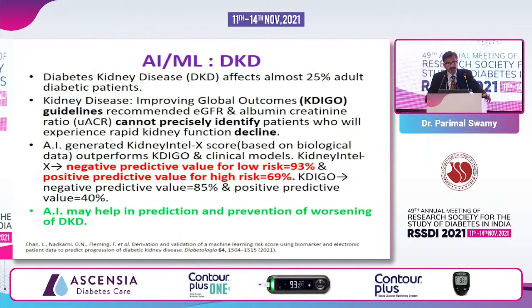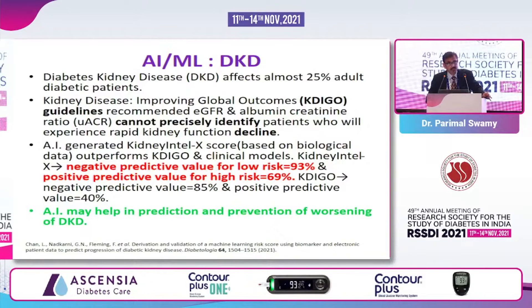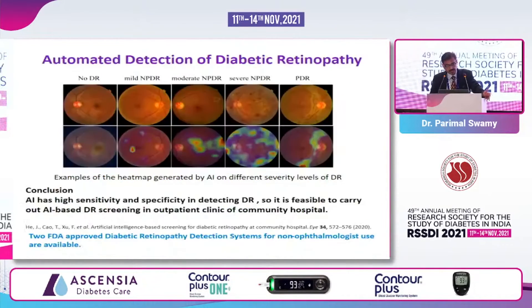Diabetic kidney disease is one of the dreaded complications. We have the KDIGO guidelines which can classify the severity of DKD, but they cannot predict the outcome. The Kidney Intel X score — published this year in 2021 — with a very high amount of specificity and sensitivity can differentiate patients who are at high risk of developing worsening DKD. This sort of AI-generated prediction can prevent the worsening of DKD in our diabetic patients.